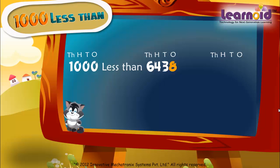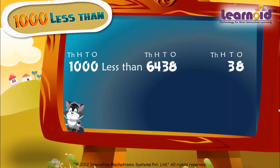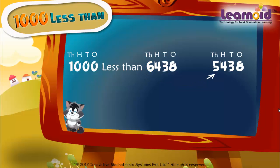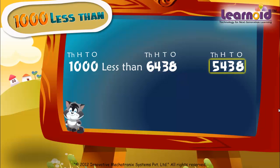Write eight in the one's place, three in the ten's place, four in the hundred's place. Now subtract one from six, which is five. One thousand less than six thousand four hundred thirty-eight is five thousand four hundred thirty-eight.